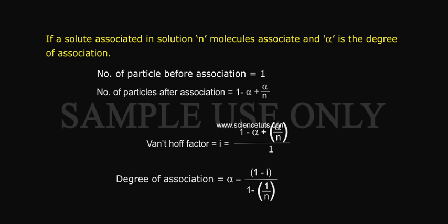Degree of association alpha is equal to 1 minus I by 1 minus 1 by N.